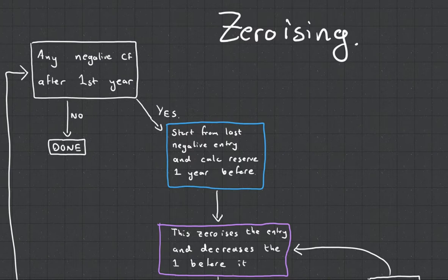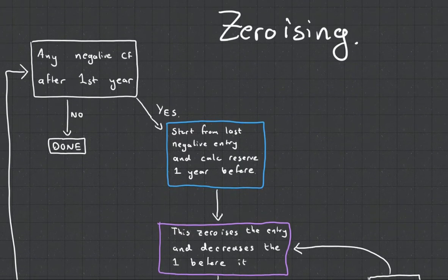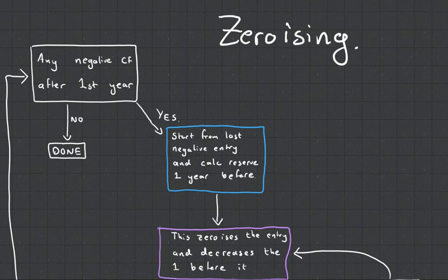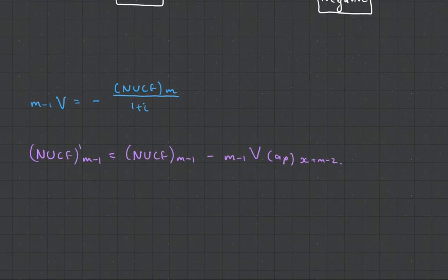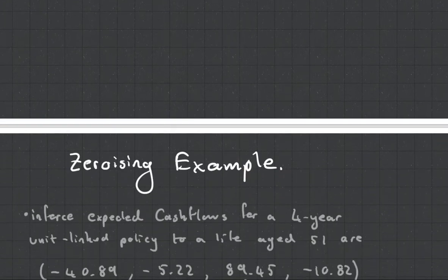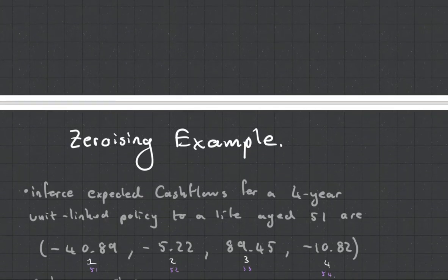It can't all fit in the screen at once, so we'll start here. Basically, what you do with zeroizing is you'll have your profit vector. Let me see if I have an example of a profit vector.